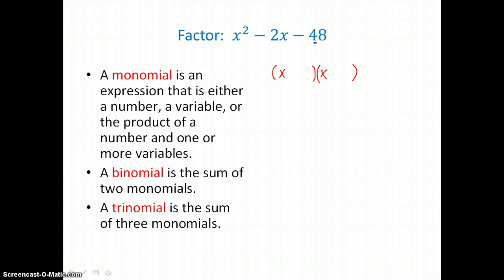Then we'll factor the constant term, the third term, negative 48. We want factors of 48 that have a difference of 2. Factors of 48 that have a difference of 2 are 6 and 8, because 6 times 8 is 48.